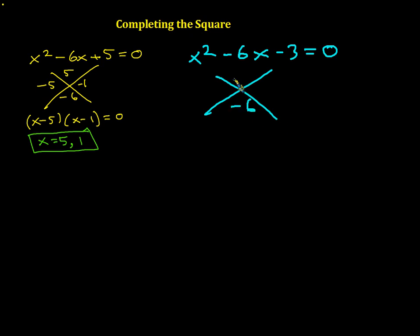You're just not going to be able to factor this guy. Negative 6 goes here, negative 3 goes here. And really, there are no two numbers that multiply together to get me negative 3 that add up to negative 6. So I'm going to have to scratch that. I'm going to have to say goodbye to this guy. Sorry.